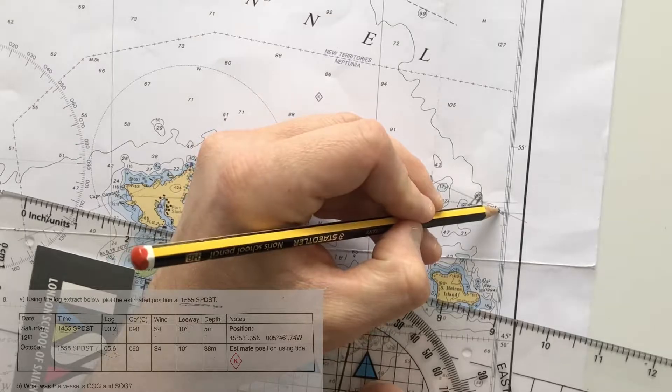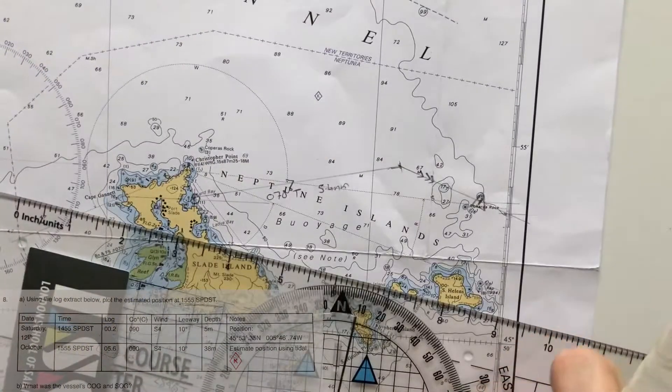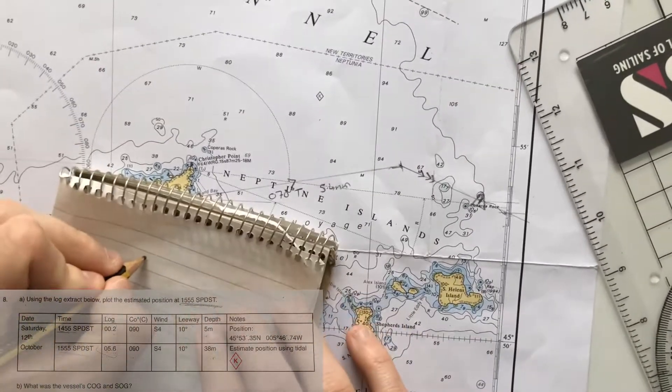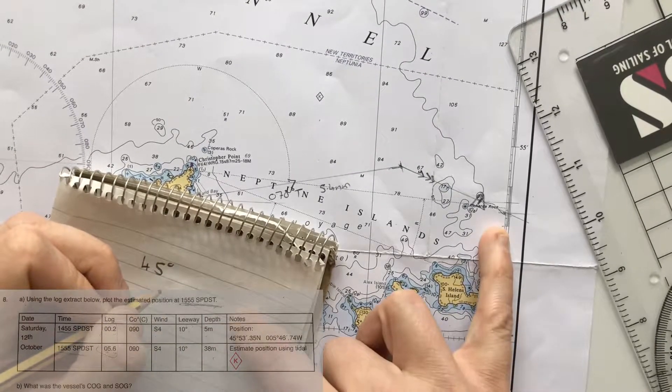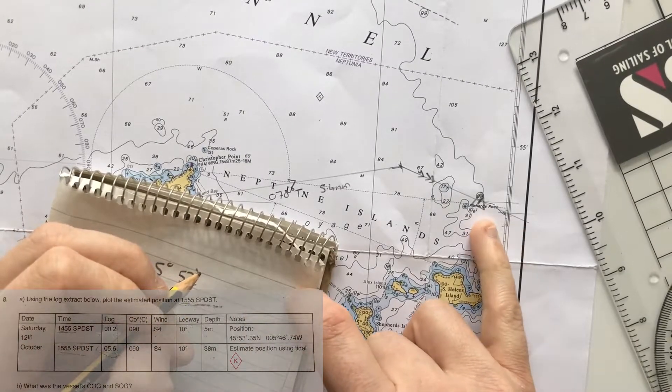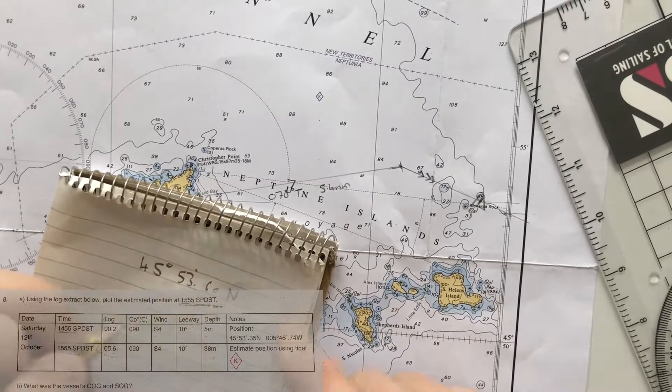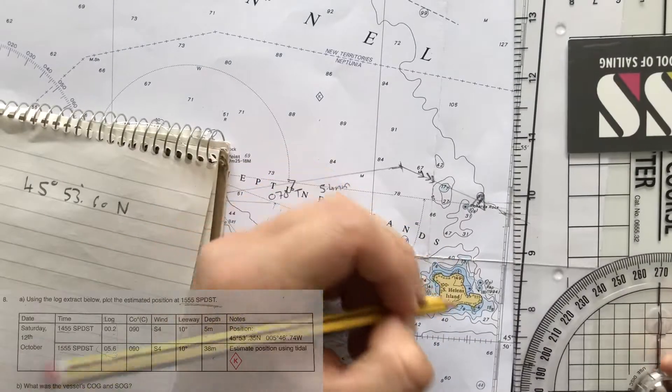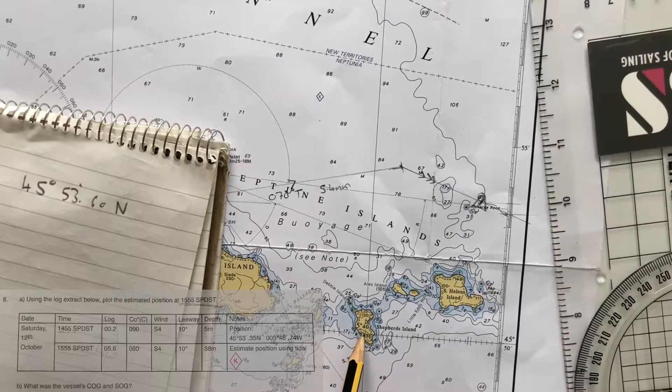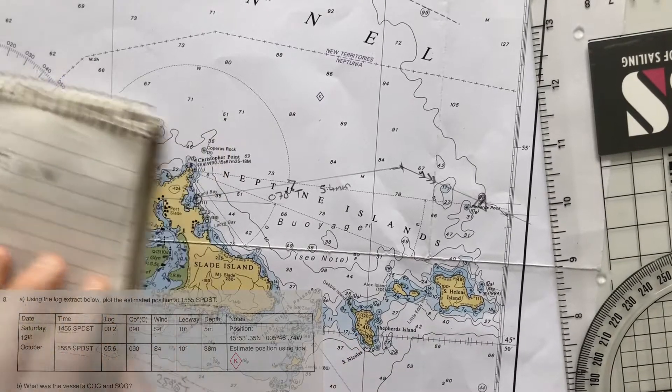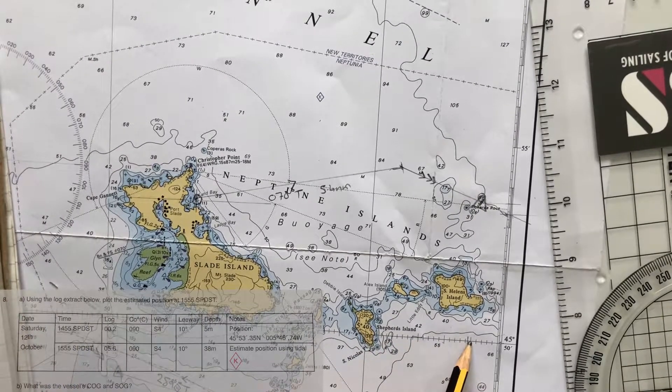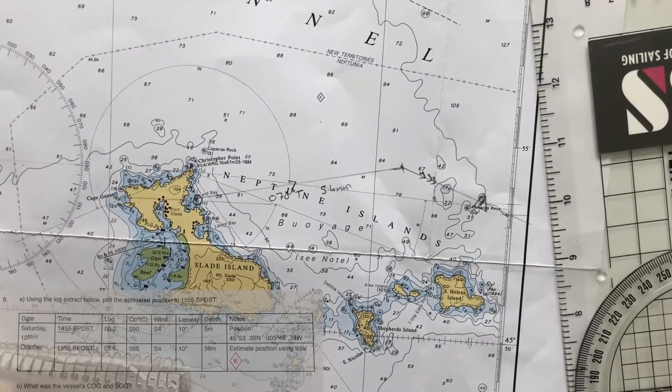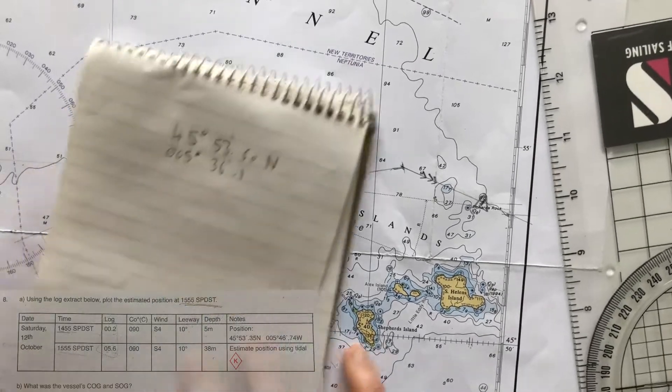So I have got coordinates of 45 degrees, 51, 52, 53 minutes, decimal 2, 4, 6, 0 north, and my longitude just down here is 5 degrees, 40, 39, 38, 37, 36.1.